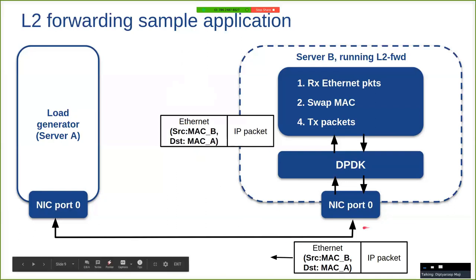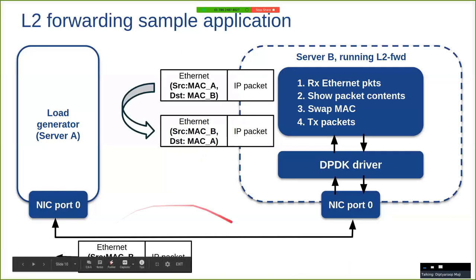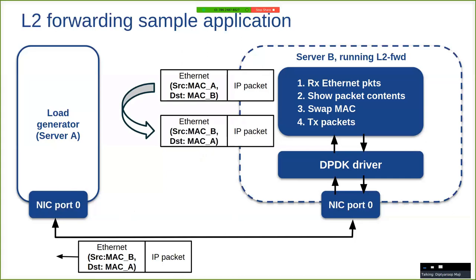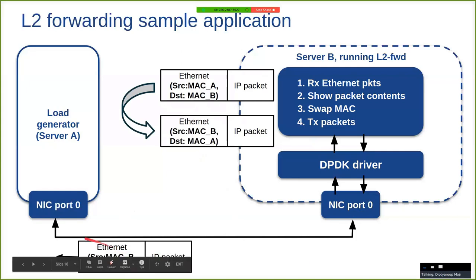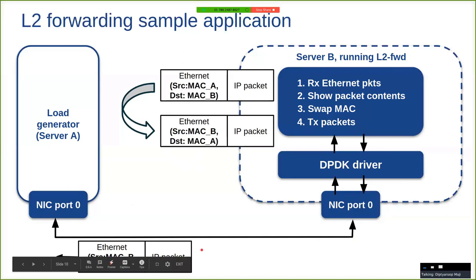Once this packet is out of the NIC, the source is MAC B and destination is MAC A, and it reaches server A — the load generator. So the Ethernet header is manipulated, MAC addresses are swapped, and those packets are sent back. The load generator continuously sends packets, our application swaps the MAC and returns those packets. Let me give a demo first — I'll be using certain command line arguments which I'll explain in the next few slides.